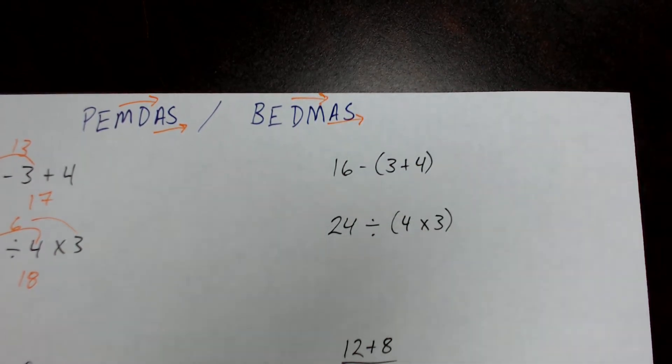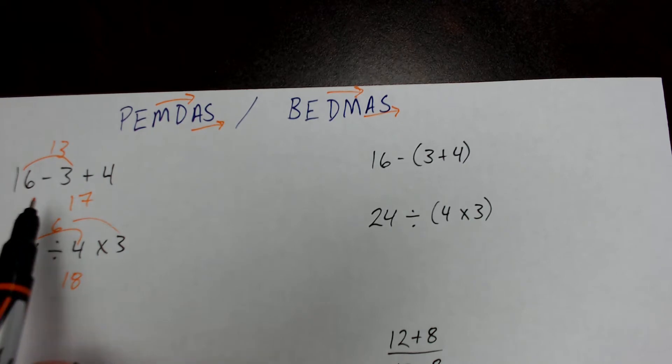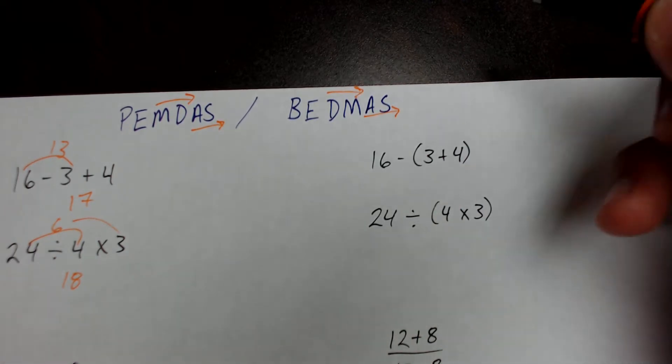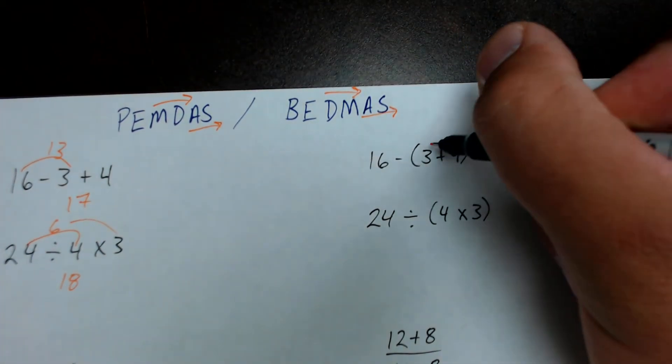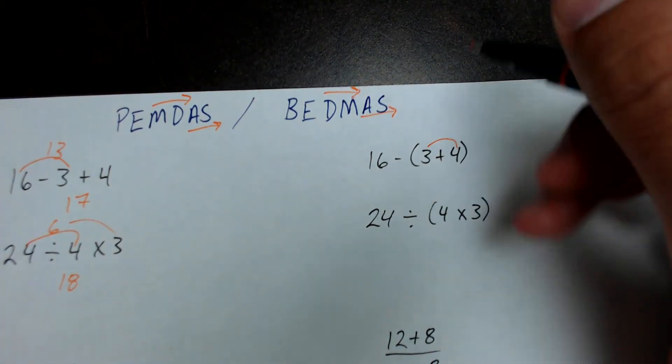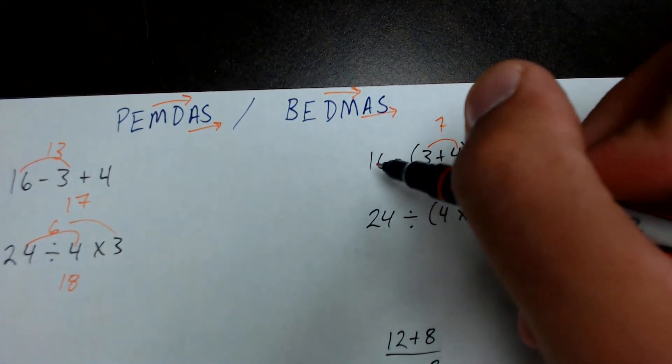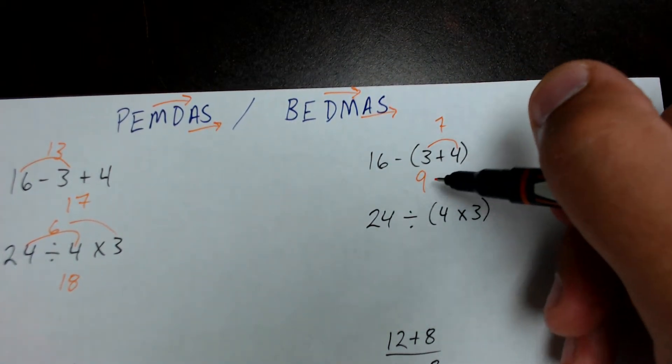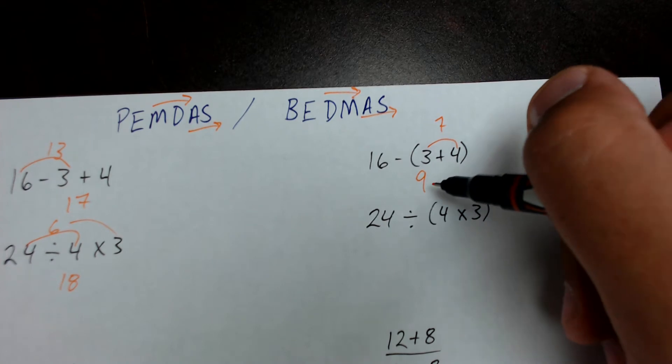So, for example, this problem, it looks very similar to the first one. However, instead of doing 16 minus 3, I have to solve these brackets first. So, I have to solve 3 plus 4 first. 3 plus 4 gives me 7. And then 16 minus 7 gives me 9. So I have a very different answer over here. So 9 is the correct answer over here.